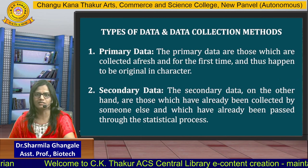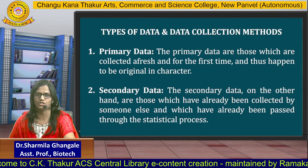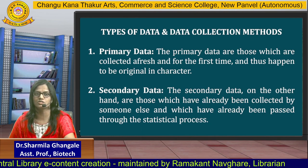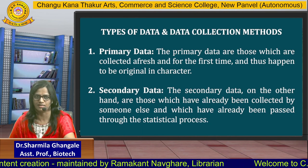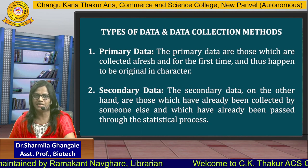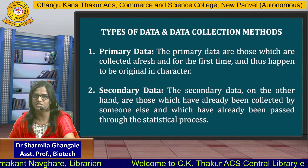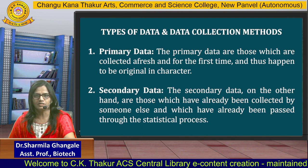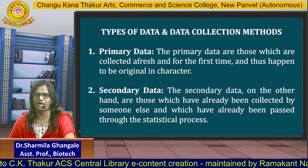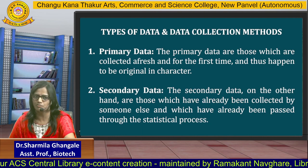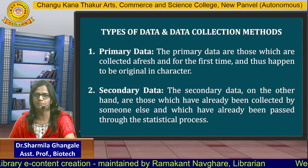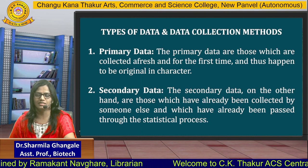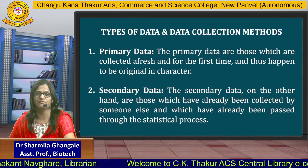As far as primary data is concerned, primary data are those data which are collected afresh and for the first time, and they happen to be original in character. This kind of data is supposed to be collected by the researcher himself or herself. Primary data is collected for the first time; it has not been published anywhere before. On the contrary, secondary data are those which have already been collected by someone, published by someone, or have already been passed through statistical processes. Such data is called secondary data. Based on the different types of data, you will have different methods for data collection.